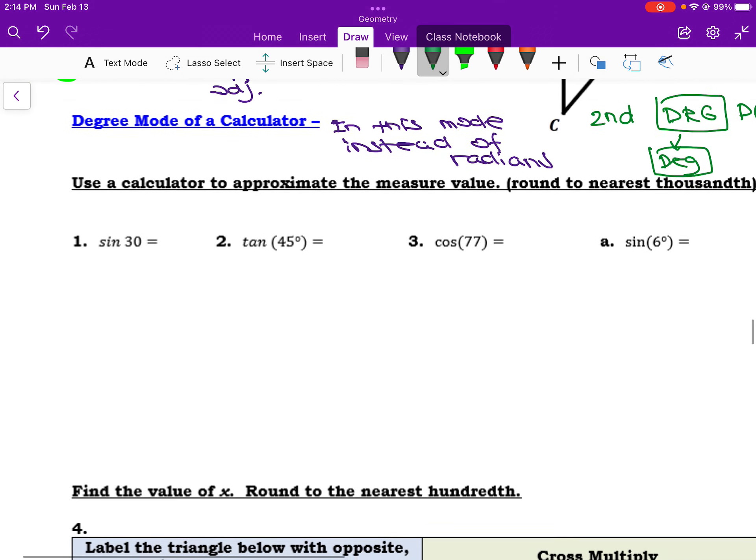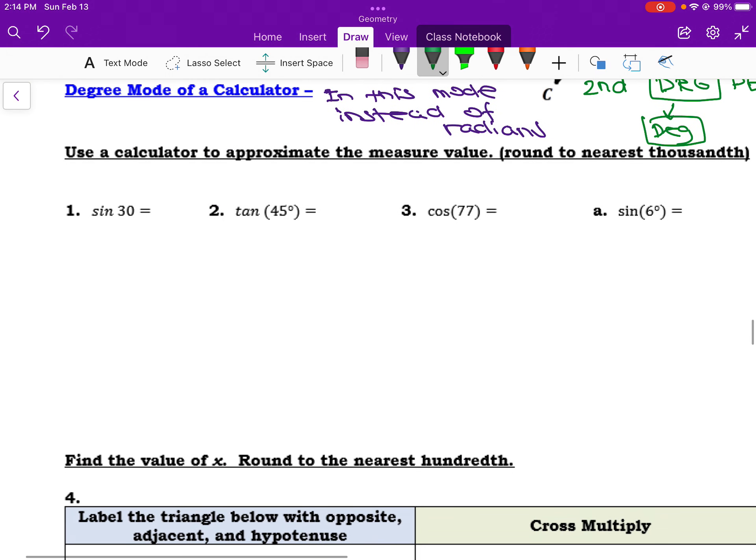So we're going to be using a calculator to approximate these values, and we're rounding to the nearest thousandth. So sine of 30, there's actually a button on my calculator, I just hit sine, type in 30, assuming I'm in the proper mode, hit enter, and I get 0.5. There's no rounding necessary there.